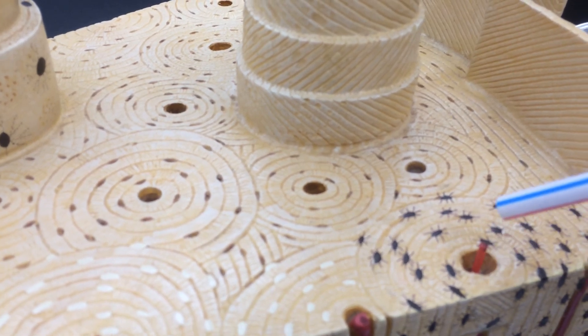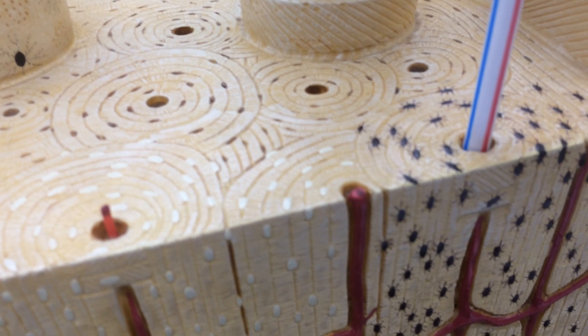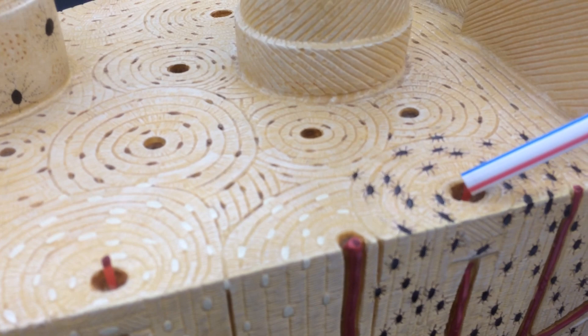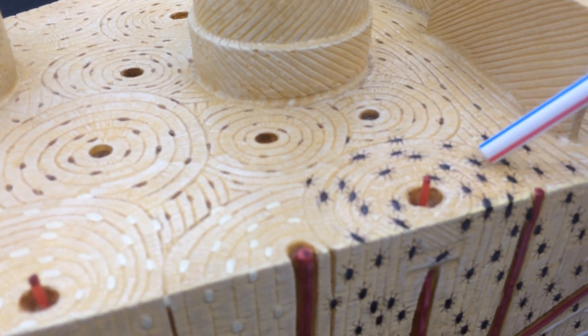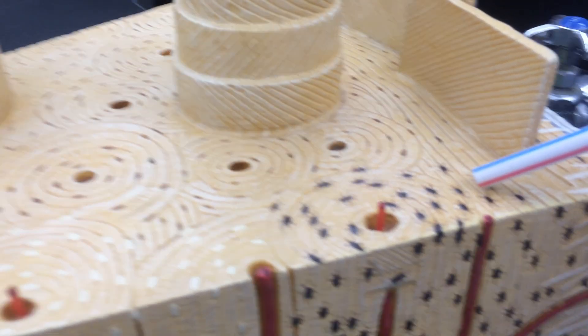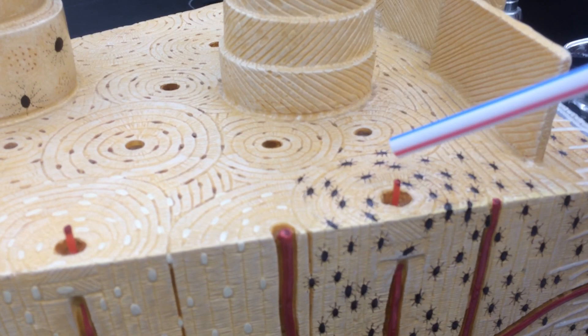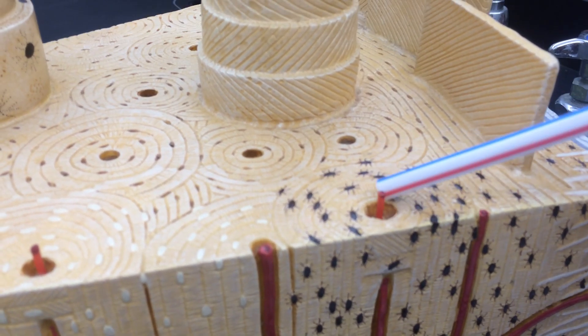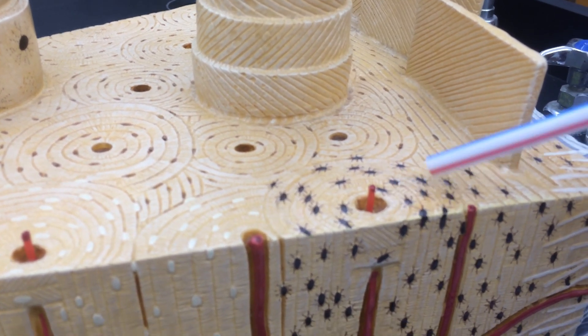The important function of the canaliculi is to allow the nutrients from the blood vessels to move to the osteocytes. So essentially the nutrients are moving from a higher concentration within the blood vessel to a lower concentration. So we have canaliculi so that each osteocyte can actually get nutrients.